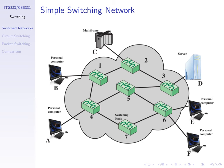Instead we connect stations via intermediate devices, where those intermediate devices have the role of forwarding our data to the destination. We have the stations — the ones which create and consume data — on the outside. And we introduce some intermediate devices in the middle, these green boxes, which we call switching nodes, or nodes, or switches. Their role is not to create data or receive data, but just to forward data on behalf of the stations. In this example, we have seven switching nodes in our network.